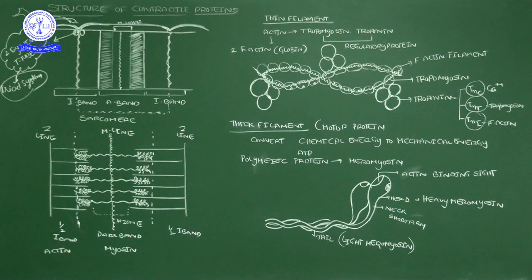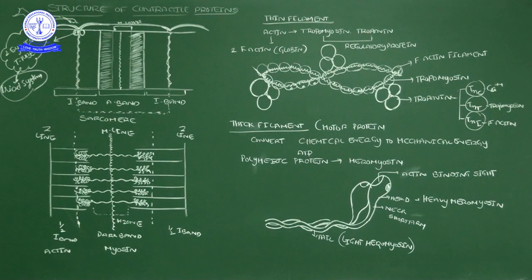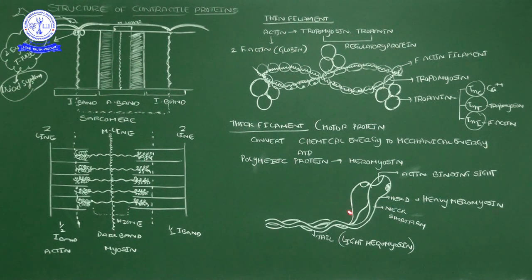The myosin protein is a polymeric protein — the same type of subunits repeatedly combine to form one complex structure. This polymeric protein is meromyosin. Thick filament is called myosin, but myosin has subunits called meromyosins. These meromyosins look like a hockey stick or golf stick — a wider head part and a narrow tail part — connected at a junction called the neck or short arm.